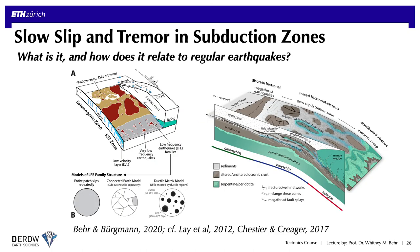The relationship of slow slip and tremor to regular earthquakes remains poorly understood but is vigorously researched. These events may reflect weaker contrasts between asperities and surrounding rocks, or smaller, more distributed asperities in a more viscous matrix near the brittle-ductile transition — in contrast to the larger, well-defined asperities that produce regular megathrust seismicity.